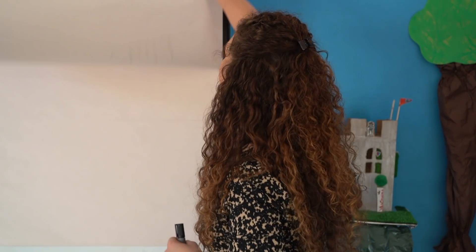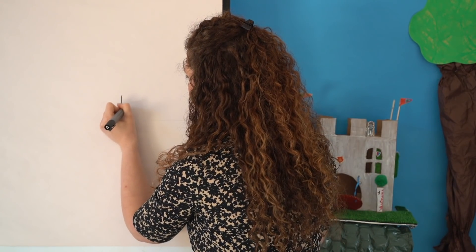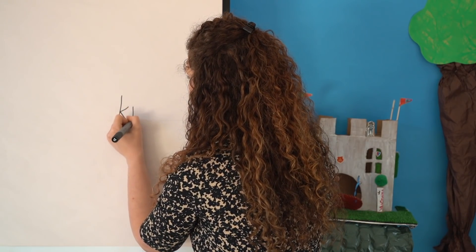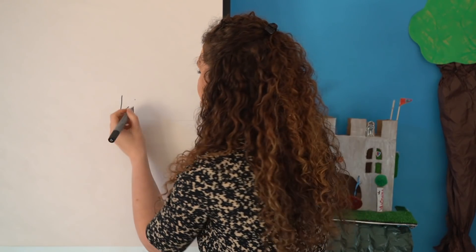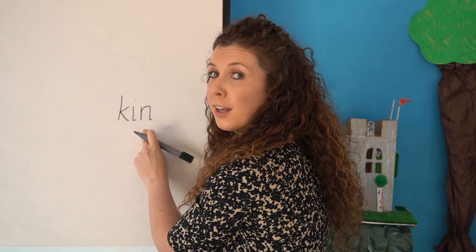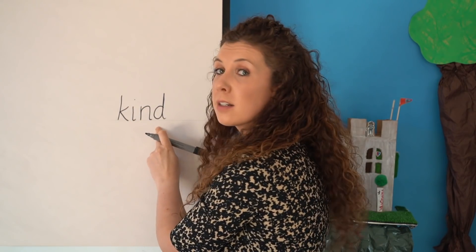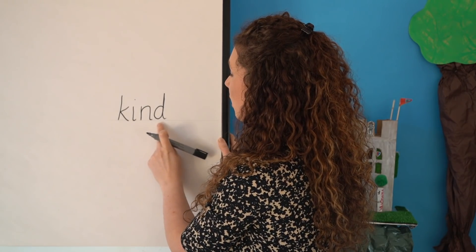Let's try another one. Let's spell 'kind'. Segment the sounds with me: kind — C, I, N, D. Let's count how many sounds there are: C, I, N, D — that's four sounds. Watch me write 'kind'. I need four sounds. Our new grapheme: I, N, D. C-I-N-D. Kind. Let's hide the word.